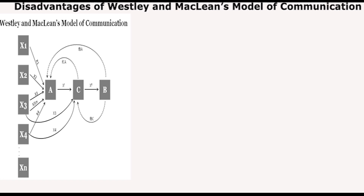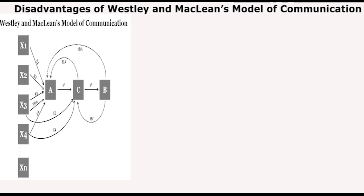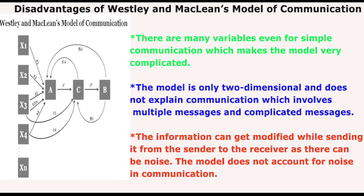Now the disadvantages of Wesley and McLean's model of communication: there are many variables even for simple communication, which makes the model very complicated. This model is only two-dimensional and does not explain communication involving multiple or complicated messages. The last disadvantage is that information can get modified while sending from sender to receiver due to noise — the model does not account for noise in communication. Thank you so much, students.